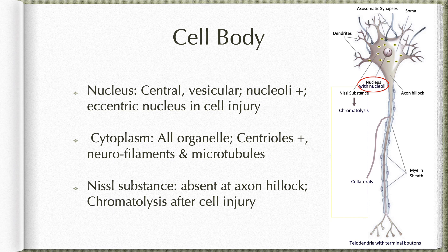The characteristic feature of the cytoplasm is the presence of Nissl substance, which are angular basophilic structures made up of rough endoplasmic reticulum. The Nissl substance extends into the dendrites but is absent in the axon hillock, and chromatolysis or absence of Nissl substance again indicates cell injury.